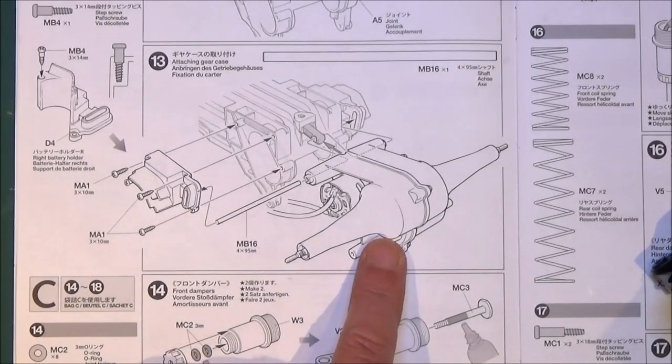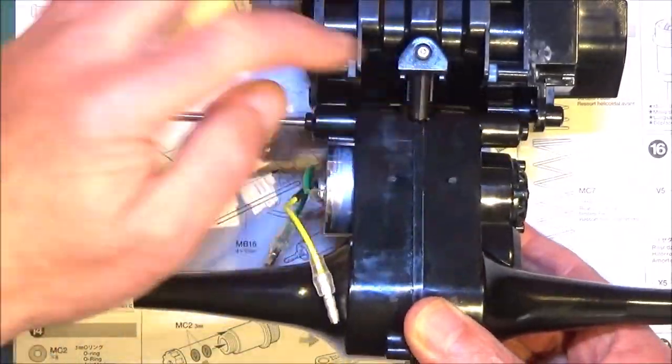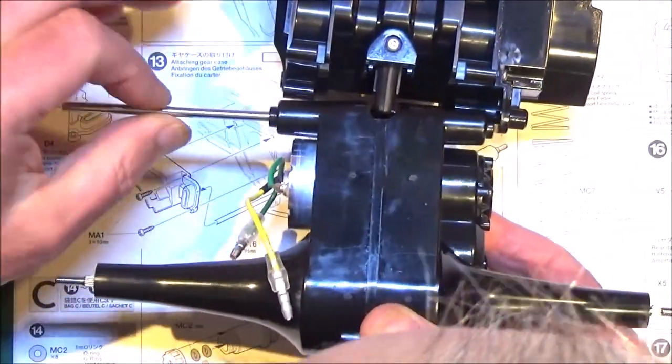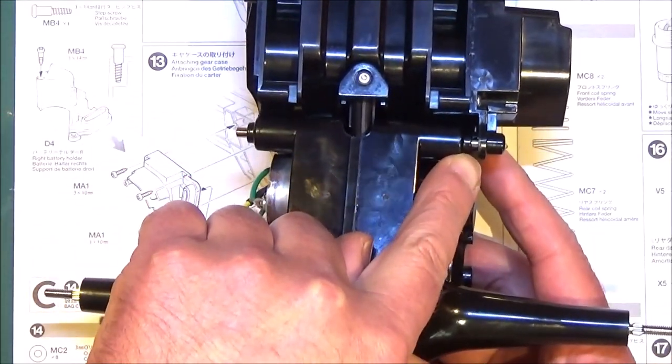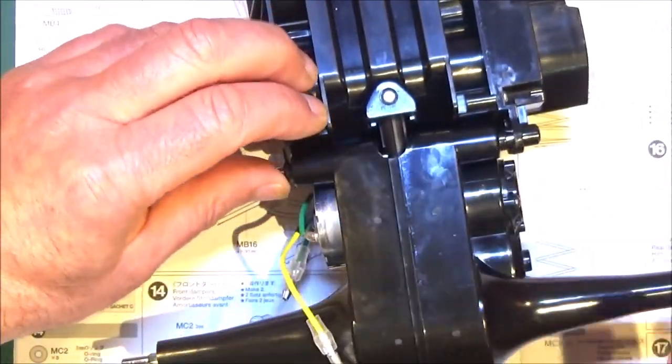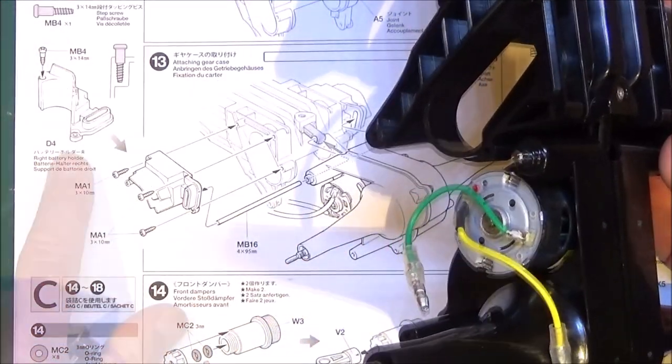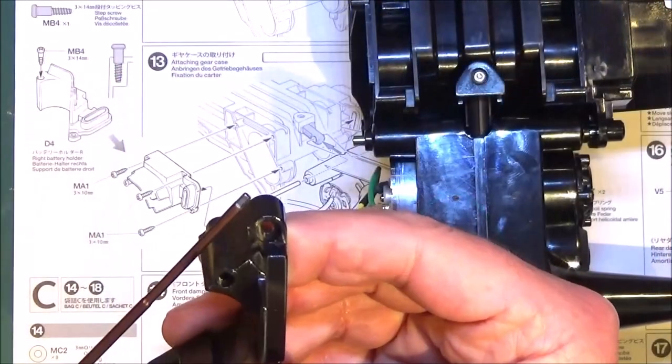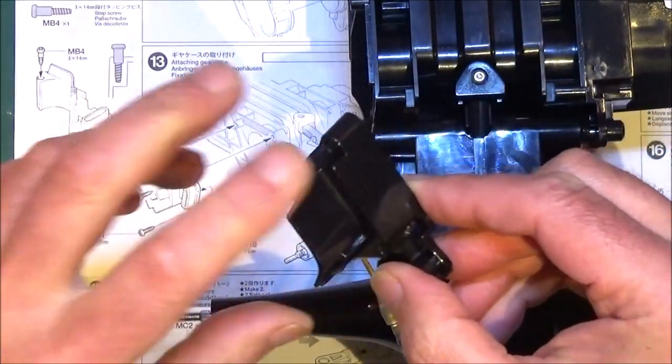On step 13, we're going to be fitting the gearbox case. You need your long shaft, and that's got to go through that pivot point there. Then line up your brace and push that all the way through. The other end of that shaft goes into the part we just fitted in step 12. That gives you your pivot. Then, just to get this all in place, we need the other plastic part, which is D4.